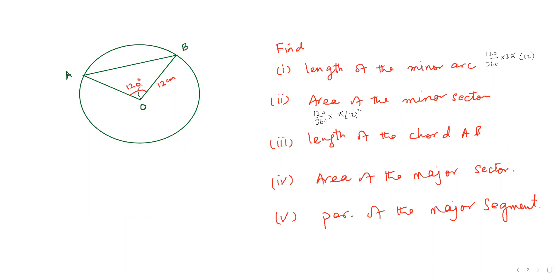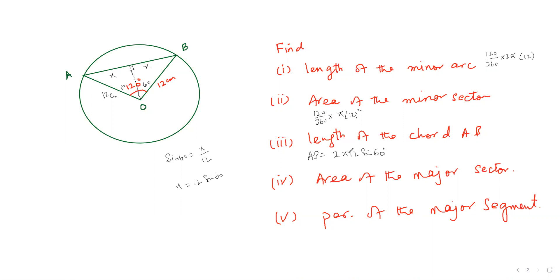For the length of the chord AB, there is always a choice of using the cosine rule, but this one is a shorter way. This angle is going to be 60, and this is going to be 60. So sine 60 equals X over 12, meaning X is 12 sine 60. So the length of chord AB is going to be twice 12 sine 60. This way you can find the length of the chord AB.